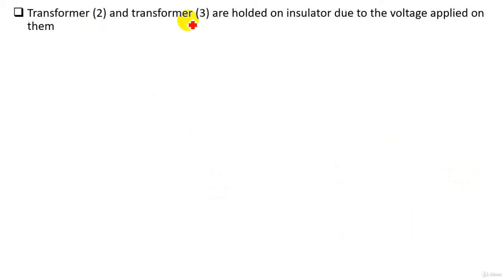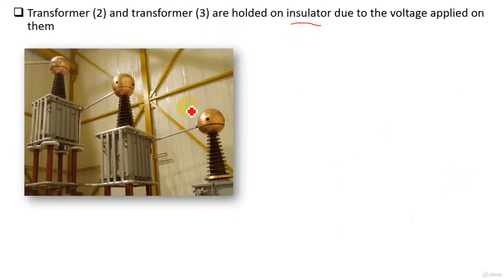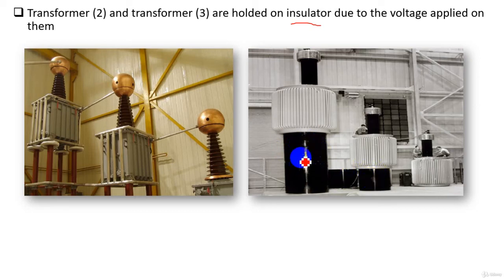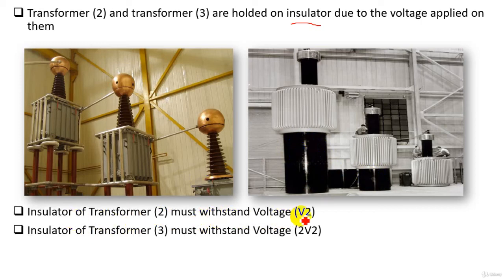Transformer 2 and transformer 3 are mounted on insulation due to the voltage applied on them. This is the configuration of three cascaded transformers: transformer 1, transformer 2, and transformer 3. Transformer 2 is mounted on insulation and transformer 3 is also mounted on insulation. Transformer 1 is on the ground as the voltage applied on it is zero, but transformer 2 has an insulation level and transformer 3 has a larger insulation level, since the insulation of transformer 3 must withstand 2V2 while transformer 2's insulation must withstand V2.